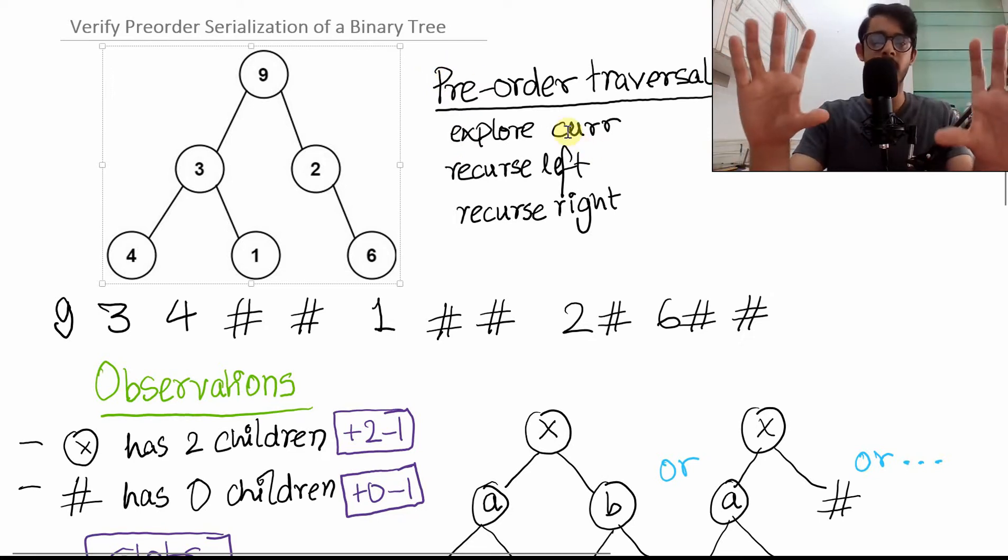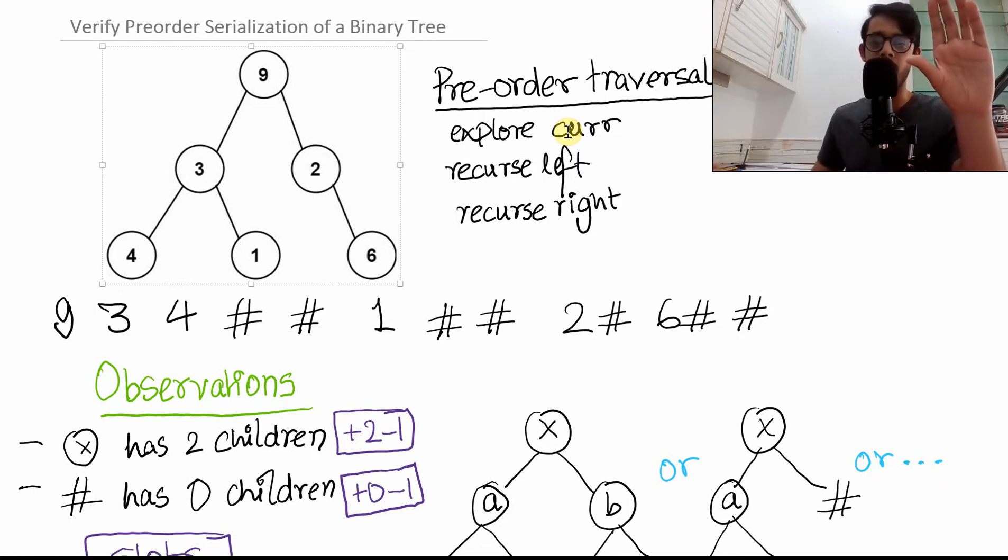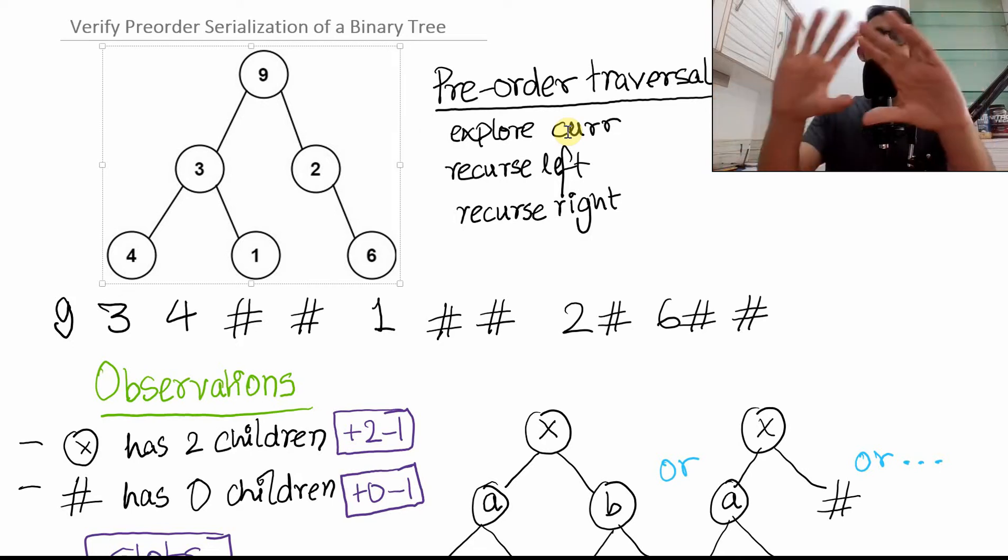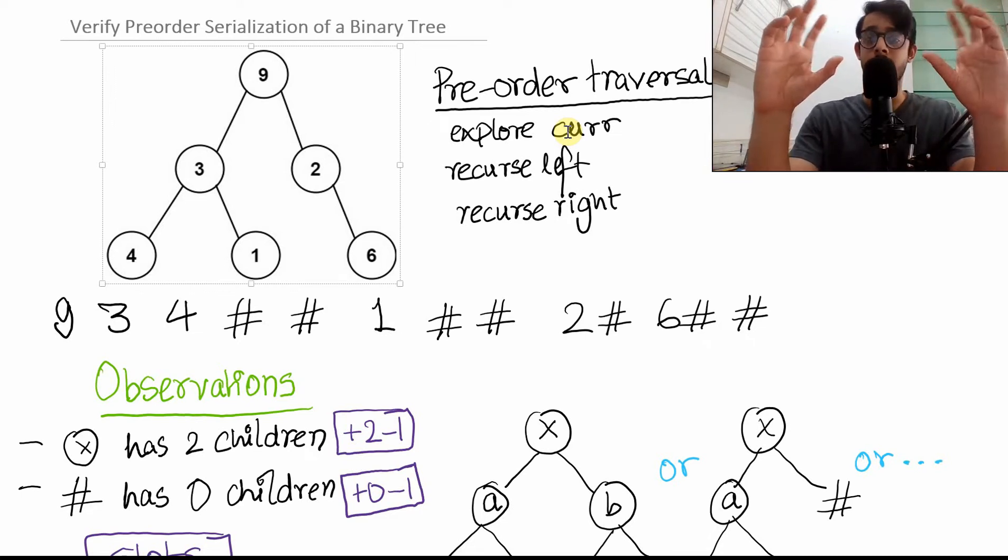Basically saying that you explore the current node and then you look at the left node, recurse from it, find all of its children and do the same exact logic from that point on. Then you do the same for the right hand side. So, explore the current, recurse to the left and then recurse to the right.